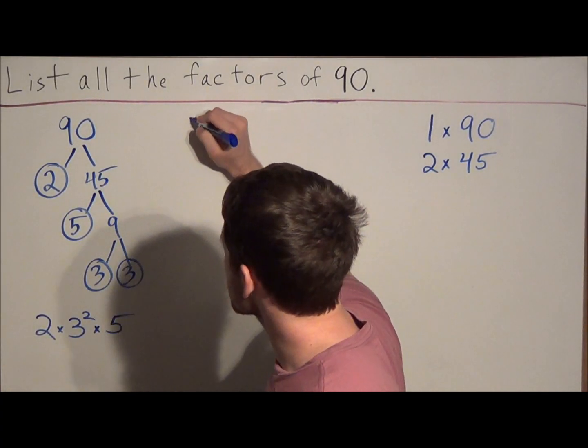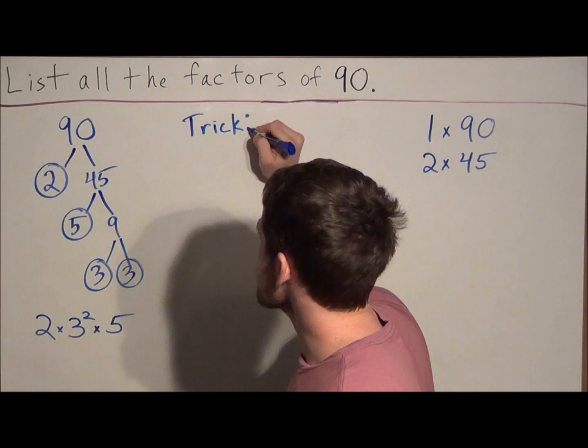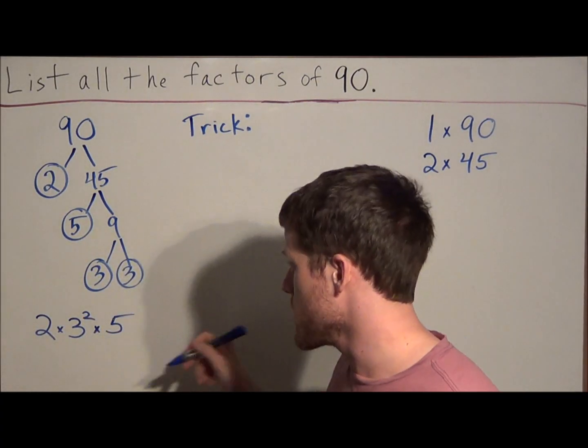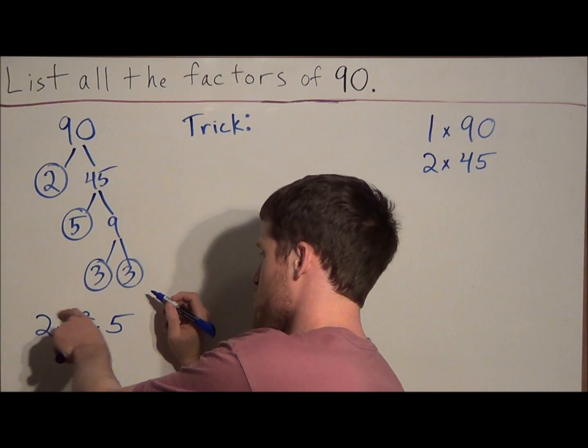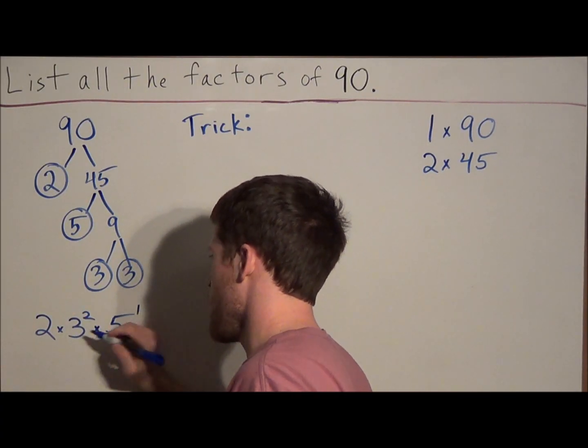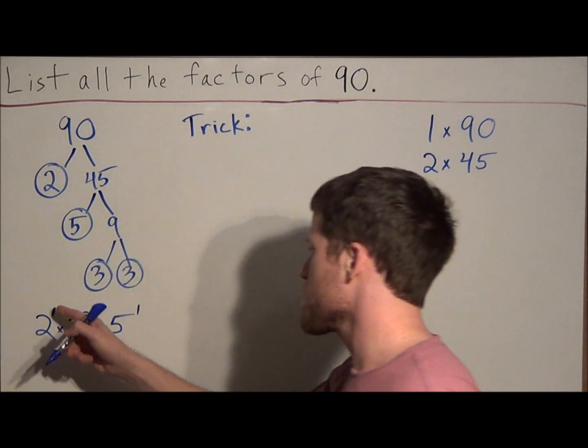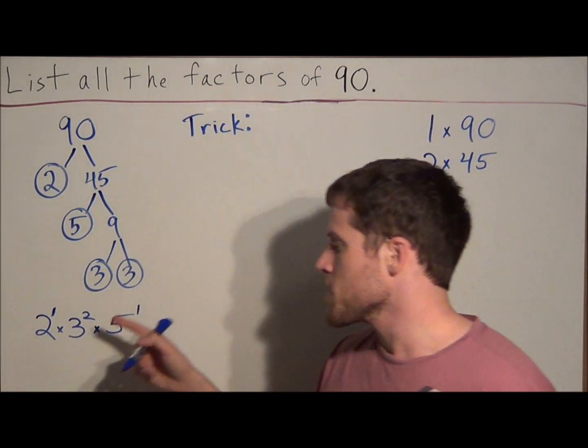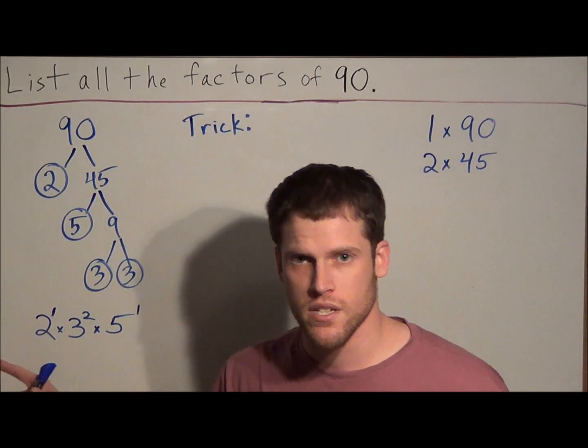But now the way this trick works is you have to look at the exponents involved. And notice we have an exponent of 2, and the exponents for 2 and 5, since it's not written there, is going to be 1. Remember, if there's no exponent written, the exponent is equal to 1. And what we need to do for this trick is we look at the exponents, and we're going to add 1 to each of those numbers.